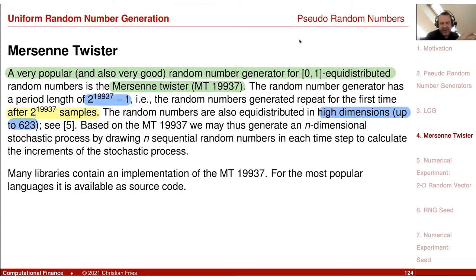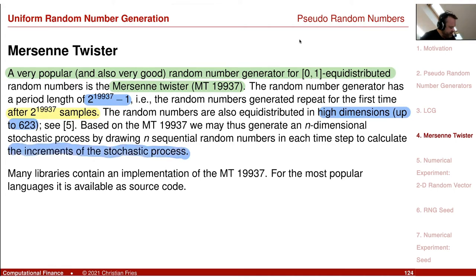Maybe you wonder whether we would really calculate integrals in 623 dimensions. In this lecture, yes, we will. Because if you look at the discretization of stochastic processes, time discretization is a dimension. If you make a time discretization with 100 time steps, it is actually a 100-dimensional integration. We will look at this later.